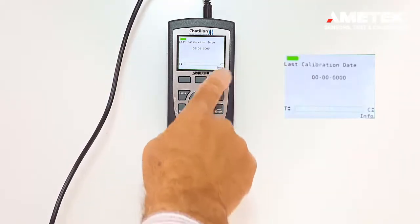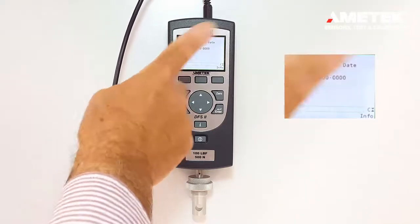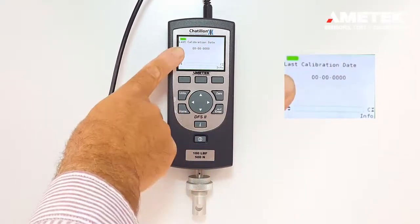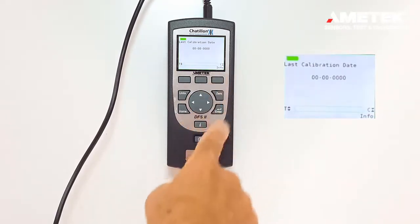Now if the information button is pressed again, we can display the calibration date of the force gauge. This gauge is a demo unit, so we just have zeros, but the calibration date will be displayed in this screen.